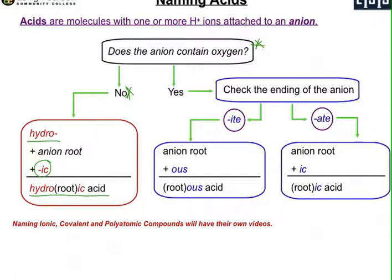Now if the anion does contain oxygen, then you're on the right. You're going to have to check the ending of the anion. Is it an I-T-E anion or an A-T-E? A-T-E would be like sulfate or phosphate. I-T-E would be sulfite or nitrite. If it's the I-T-E ending, you start with the anion root and add O-U-S at the end, so root plus O-U-S and then the word acid. If the anion is A-T-E like sulfate, you start with the root and add IC. So you have root, then IC, and then the word acid.